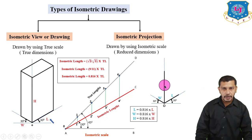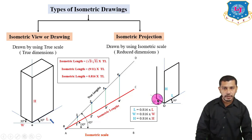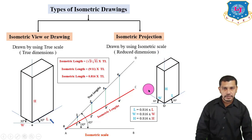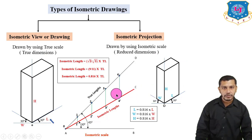Draw lines parallel to complete the isometric projection of the cuboid. The only difference between isometric view and isometric projection is: in isometric view we use the true scale or true dimensions, whereas in isometric projection we use the isometric length or isometric scale.